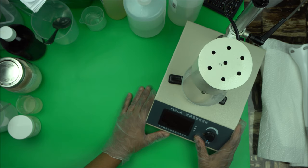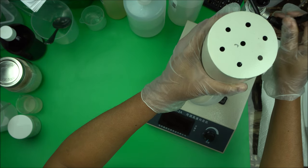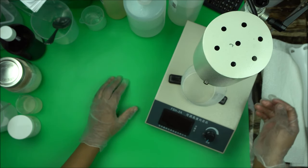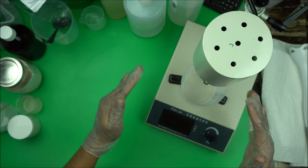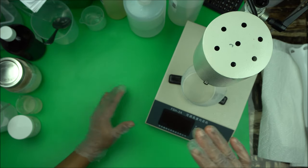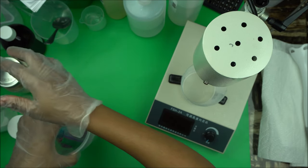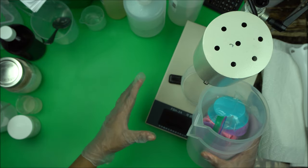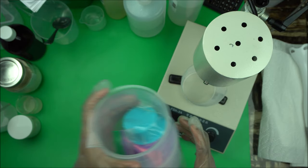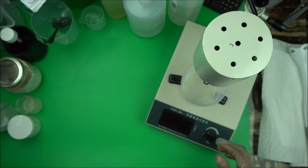You don't need an overhead mixer, and you can see this homogenizer. You can take it all the way up, especially if you have to use a bigger beaker. If you want to use a bigger beaker, you can take it up.